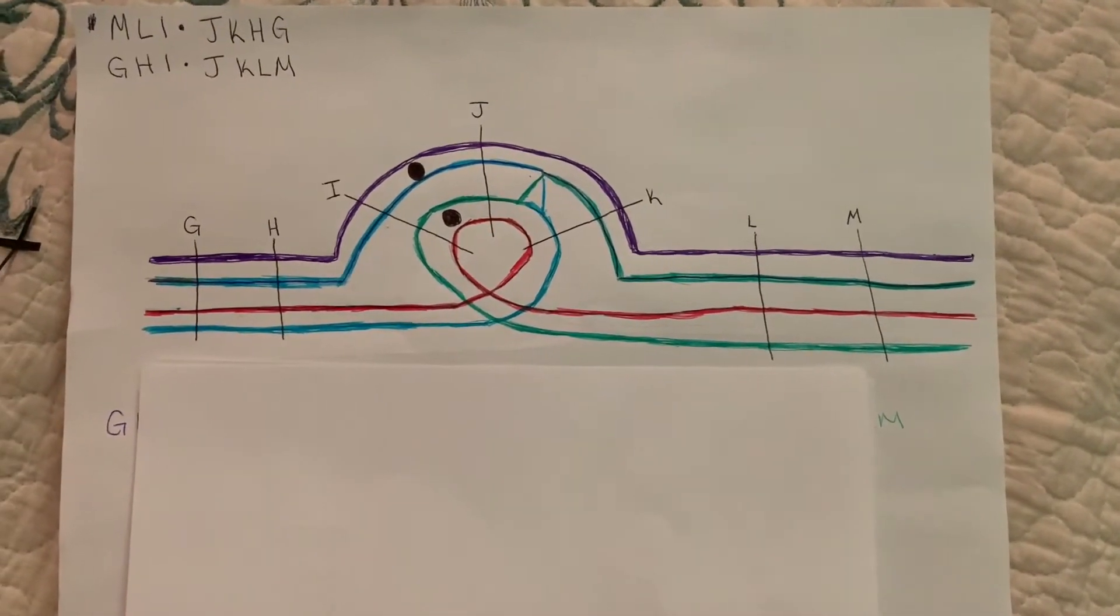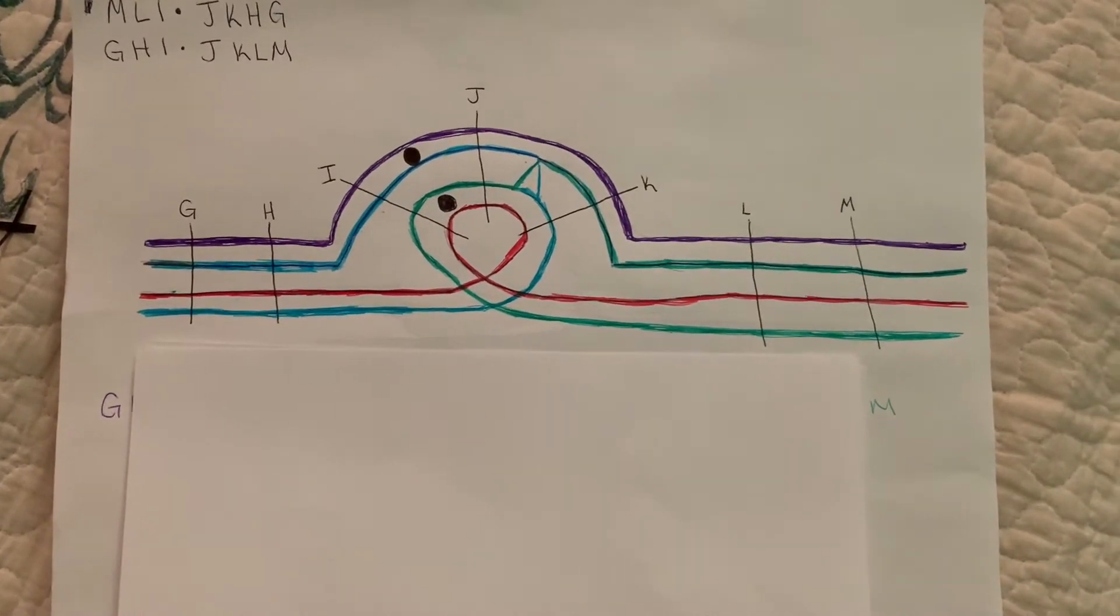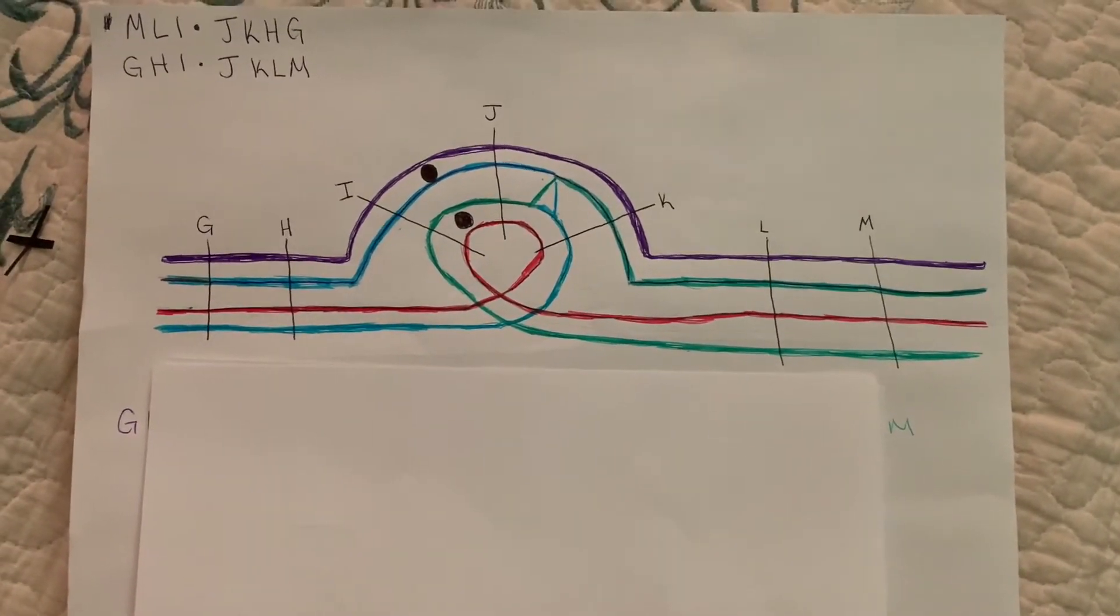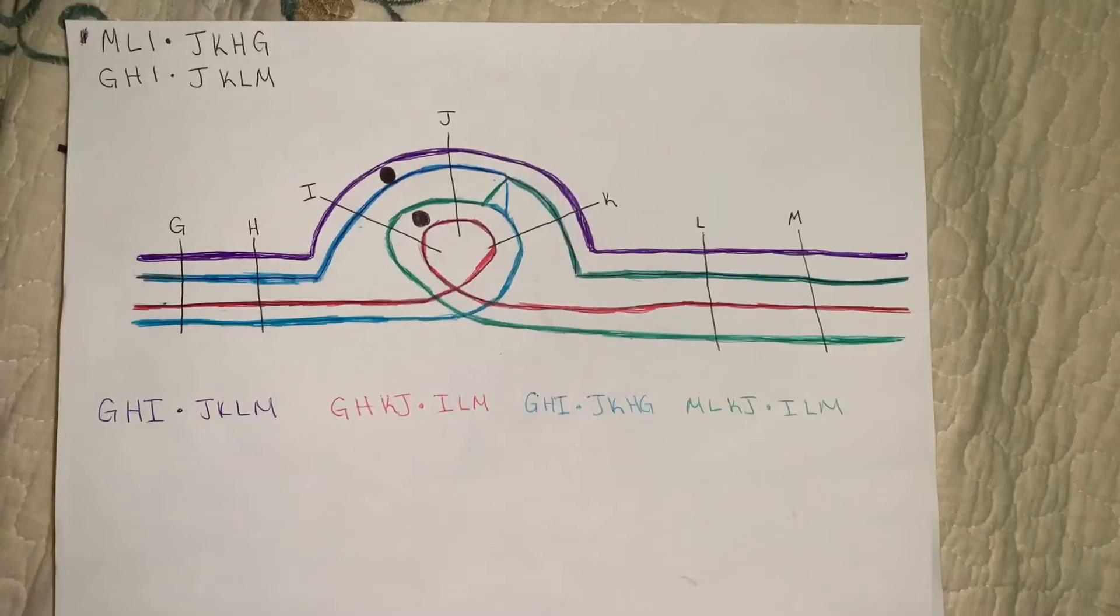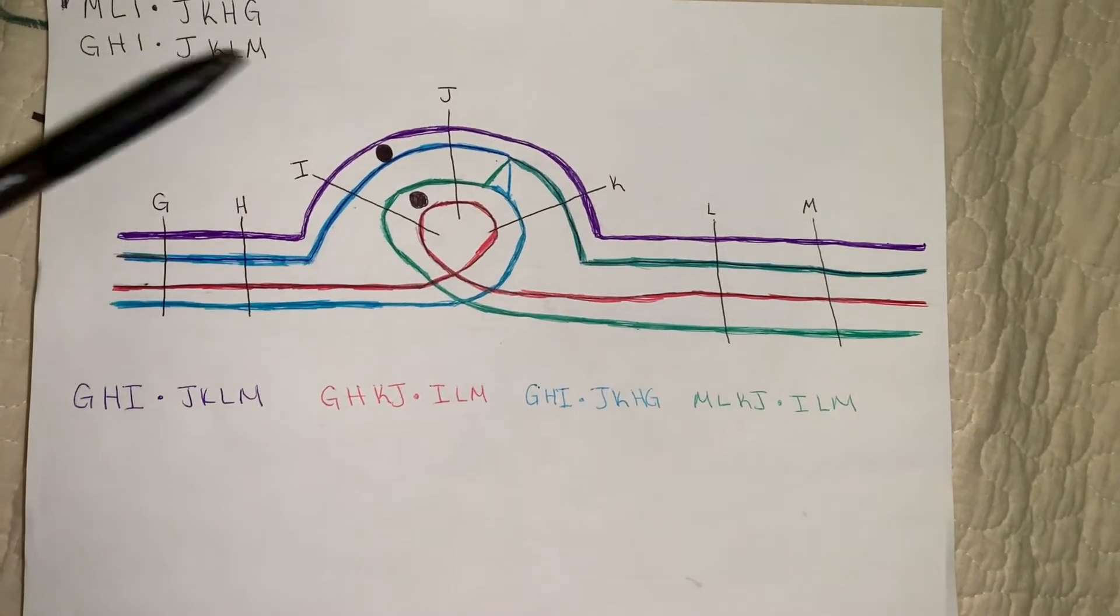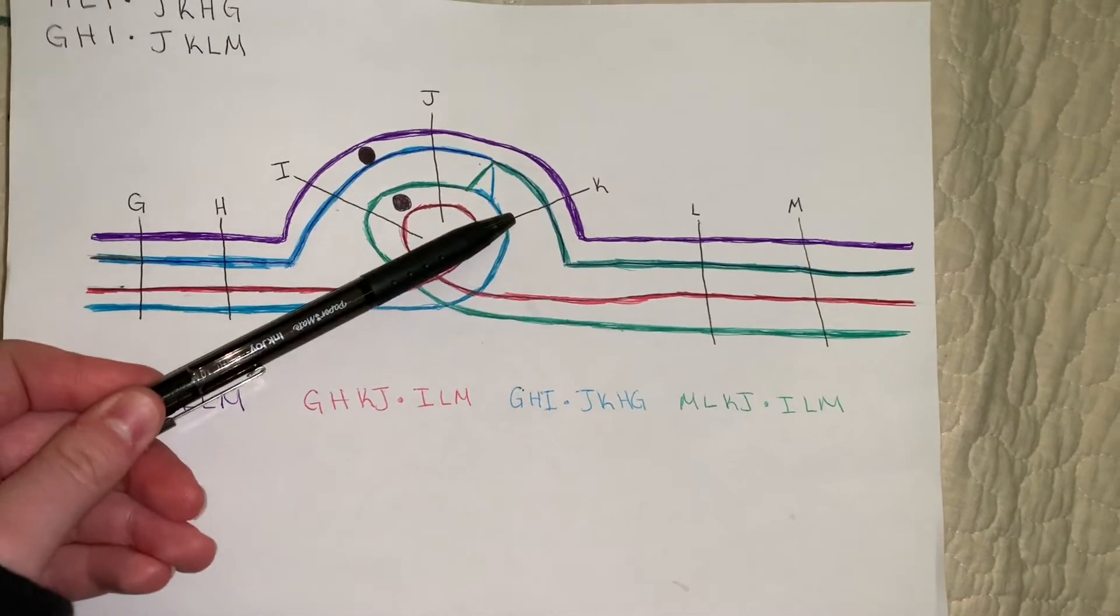This inversion has to form an inversion loop for the chromosomes to pair up for meiosis. This is a simple way of showing what the inversion loop looks like during meiosis. The crossover between these two chromosomes happens between the J-gamete and the K-gamete.